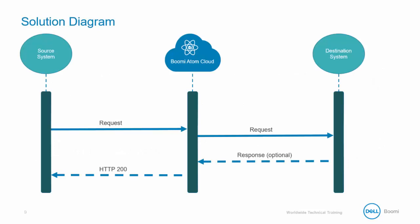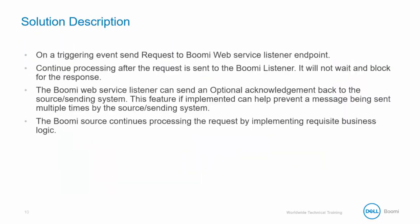This image is a solution diagram visualizing what we just talked about. First, the Atom would listen for an HTTP input request in the Boomi web service server. Then it would do required business processing — this could be a database lookup, a web service call, or a series of process calls. Then optionally there could be a return response from the destination system. Then Boomi sends an HTTP 200 OK status message back to the source system. A triggering event will send a request to the Boomi web service listener endpoint; this request could be SOAP or REST. The source system can continue processing after the request is sent to the Boomi listener.